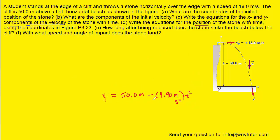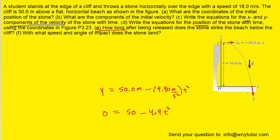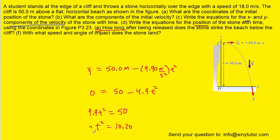We can use this Y position equation to solve part E, which asks how long after being released the stone strikes the beach below the cliff. When the stone strikes the beach, the final Y position is equal to 0 meters. Substituting 0 in for Y and solving: we move 4.9t² to the left side, then divide both sides by 4.9, and take the square root of both sides. The time is approximately 3.19 seconds — this is the correct answer to part E.